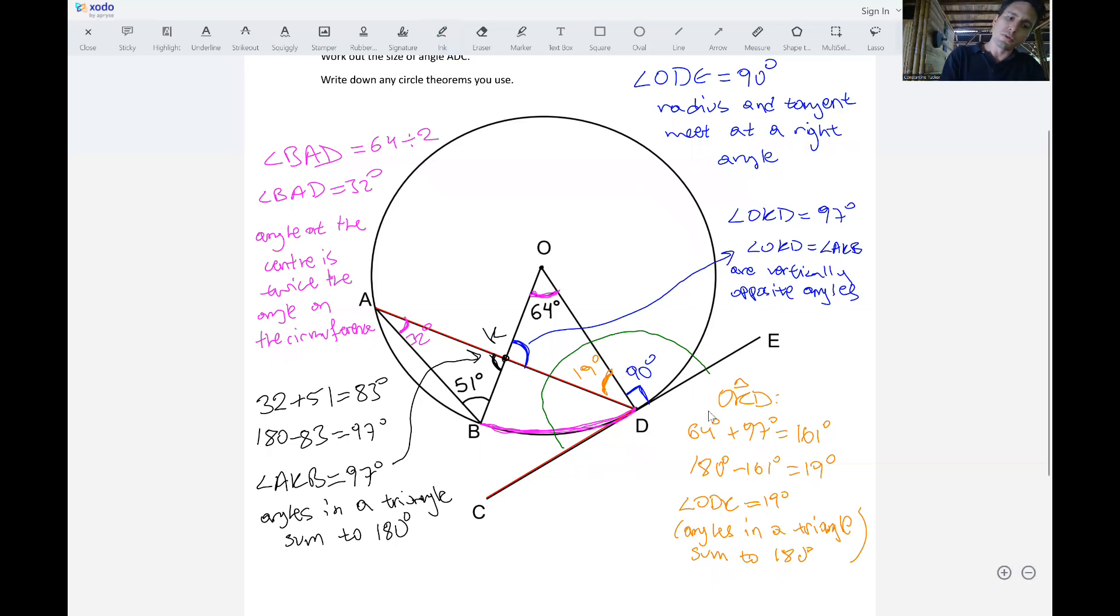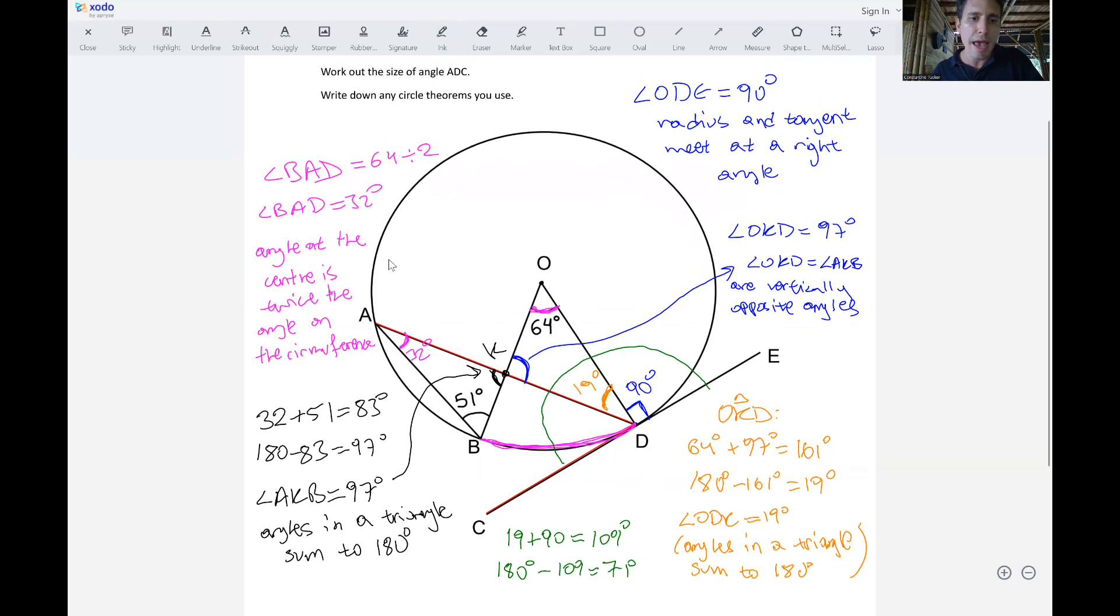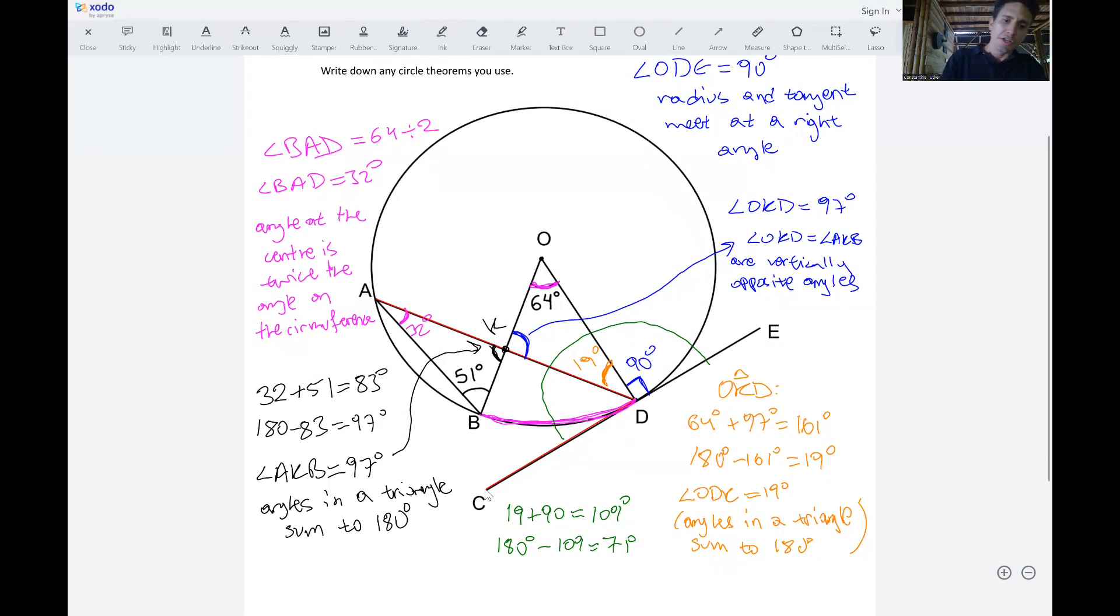So we could simply do 19 plus 90 gives us 109 degrees. So if we do 180 minus 109 that gives us 71 degrees. So what angle did we just find? The angle ADC which is what we had been asked to find.